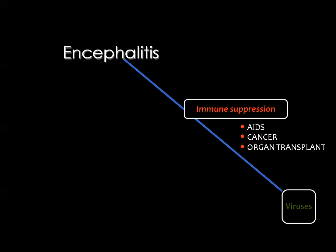Encephalitis means there is brain infection by viruses, and this infection is usually related to the immune status of the patient. Patients who are immunosuppressed or immunocompromised are more liable for viral infection, whether children or adults. The major causes of immune suppression include AIDS, cancer, and organ transplant, which is usually followed by a long course of immunosuppressive drugs.